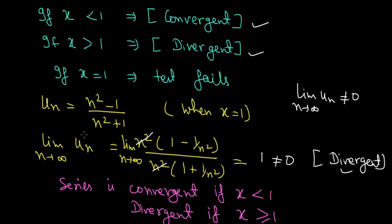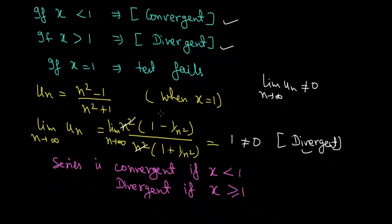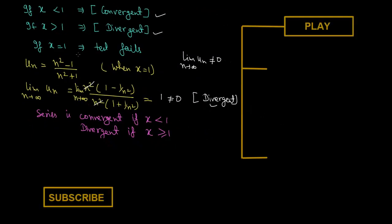This is how you can use D'Alembert's ratio test — also called simply the ratio test. For any given positive term series, find the nth term and the (n+1)th term, compute the limit of their ratio as n tends to infinity, and determine convergence or divergence. For x equal to 1, when the test fails, use another test. Thank you.